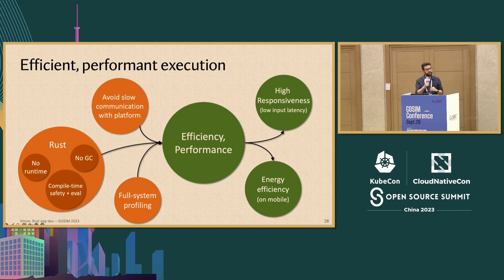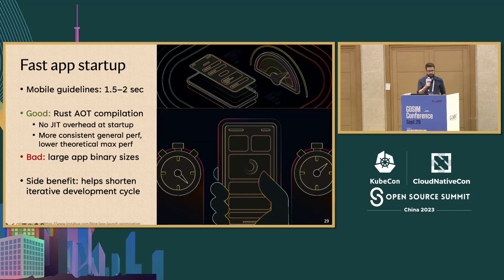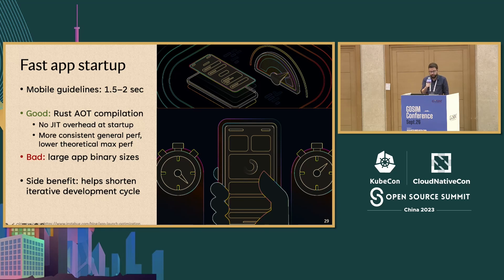We also want to provide a full system profiling tool so developers can isolate exactly where slowdowns are — not just in their application, but in the way they're using the underlying stack. The second requirement is that applications start up fast. There have been quite a few surveys: Amazon found every 100 milliseconds of latency costs them 1% in sales; Google found every half a second in search page generation reduced traffic by 20%. For mobile, a guideline is somewhere between one and a half to two seconds for startup, up to five seconds for a cold start — we should target the lower bound.